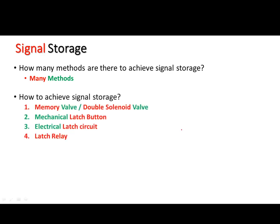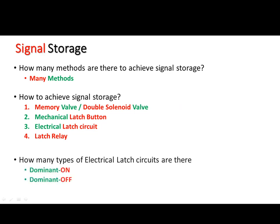We are going to look at four methods. The first is the memory valve, also called double solenoid valve. Second is the mechanical latch button. Third is the electrical latch circuit, and fourth is the latch relay. In the case of a latch circuit, there is further classification: we have two types of electrical latch circuits known as dominant on and dominant off. We will look into these further in the coming slides.